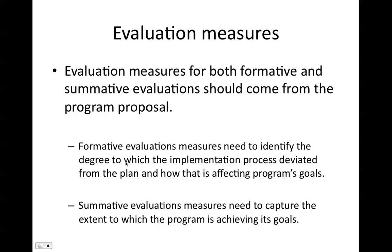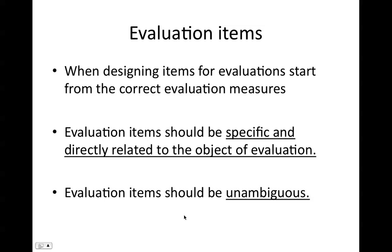The program proposal specifically describes the process they are going to use in order to achieve the outcomes. When designing items for the evaluations, you need to start with the correct evaluation measures. Your evaluation items should be very specific and directly related to the object of evaluation — much like what we've discussed before about items being specific and not ambiguous. The questions should be very specific about the process or outcome you're trying to collect data on.